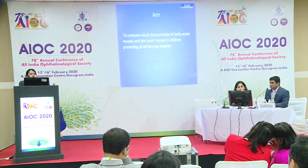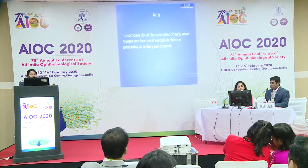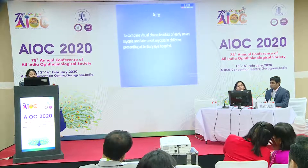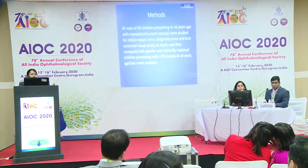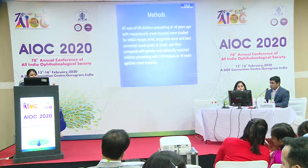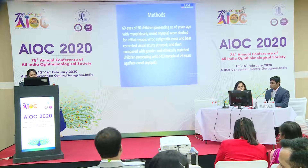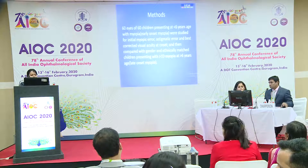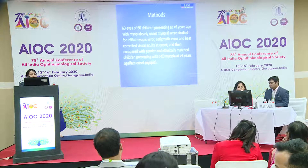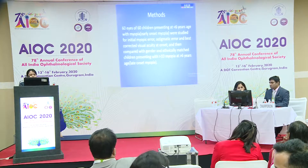My study is different because I have compared the visual characteristics of early onset myopia and late onset myopia, taking 6 years of age as a cut-off. 60 eyes of 60 children presenting with myopia below 6 years of age were studied for myopic error, astigmatic error, and best corrected visual acuity at onset, and compared with gender and ethnically matched children having more than 1 diopter myopia at more than 6 years of age.